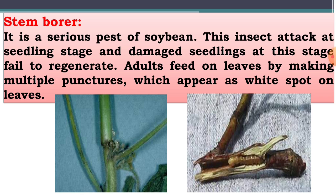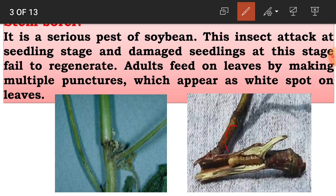The first pest is the stem borer. The nature of damage of this pest is that it attacks at the two-leaf stage or seedling stage of the crop. The damaged seedling at this stage fails to regenerate, making it a serious pest. The adult of this insect feeds on leaves by making multiple punctures, which appear as white spots on the leaves. It also bores the stem and feeds on the inner content.